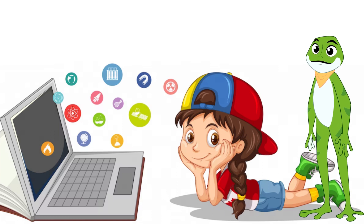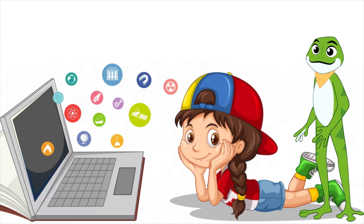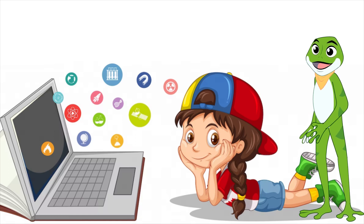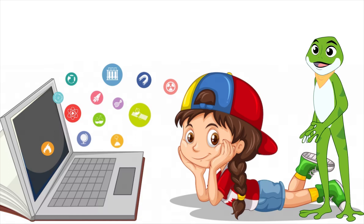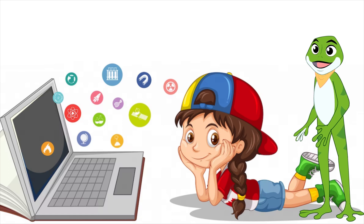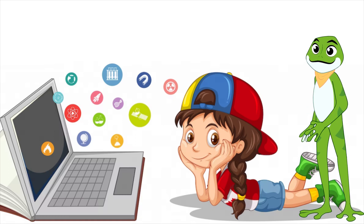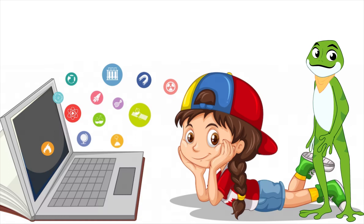Software is a type of program that helps your computer do different things. It's like a bunch of different tools that you can use to get things done on your computer. Think about it like this — when you want to draw a picture, you might use a pencil and paper. But if you want to draw a picture on your computer, you need software that can help you do that.